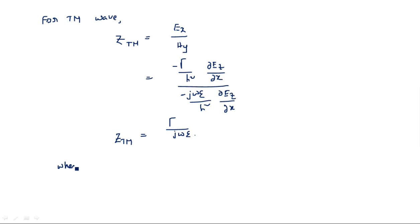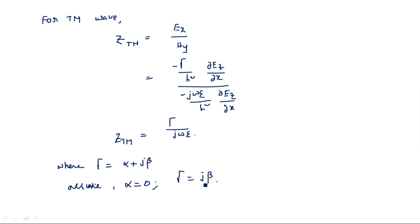We know gamma equals alpha plus j·beta. Assuming alpha equals zero, gamma equals j·beta. Substituting that, Z_TM equals j·beta divided by j·omega·epsilon. The j terms cancel.